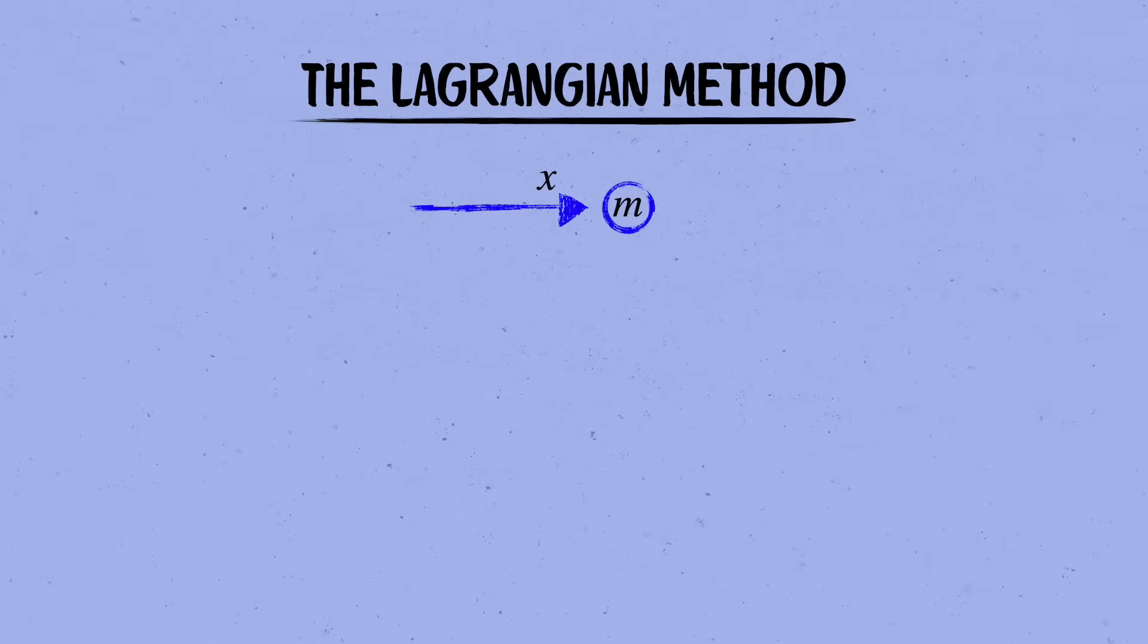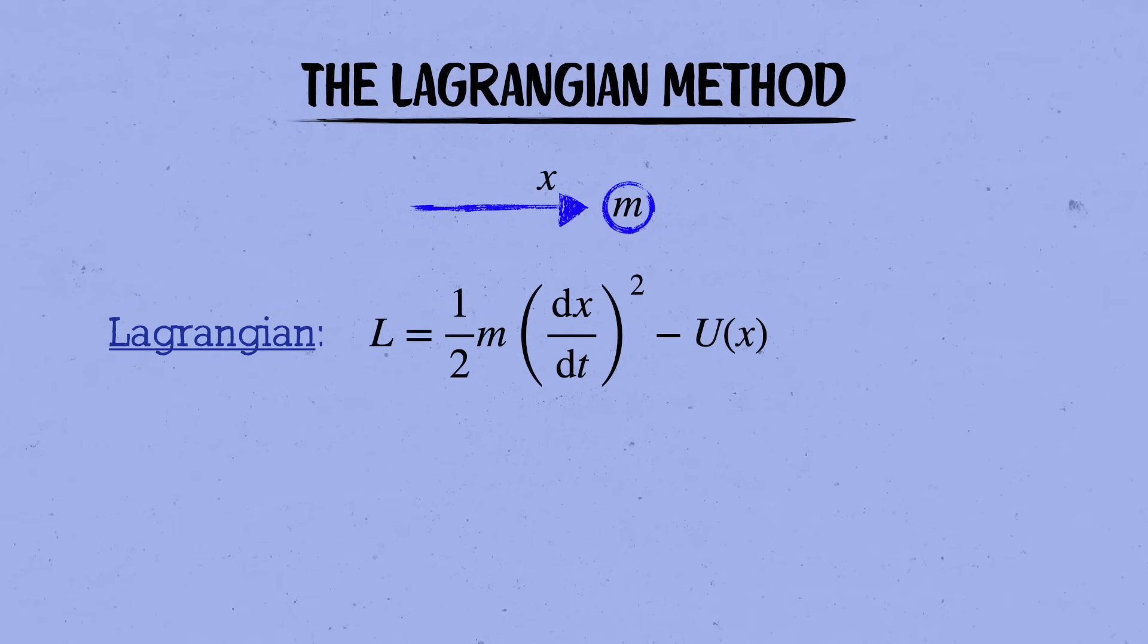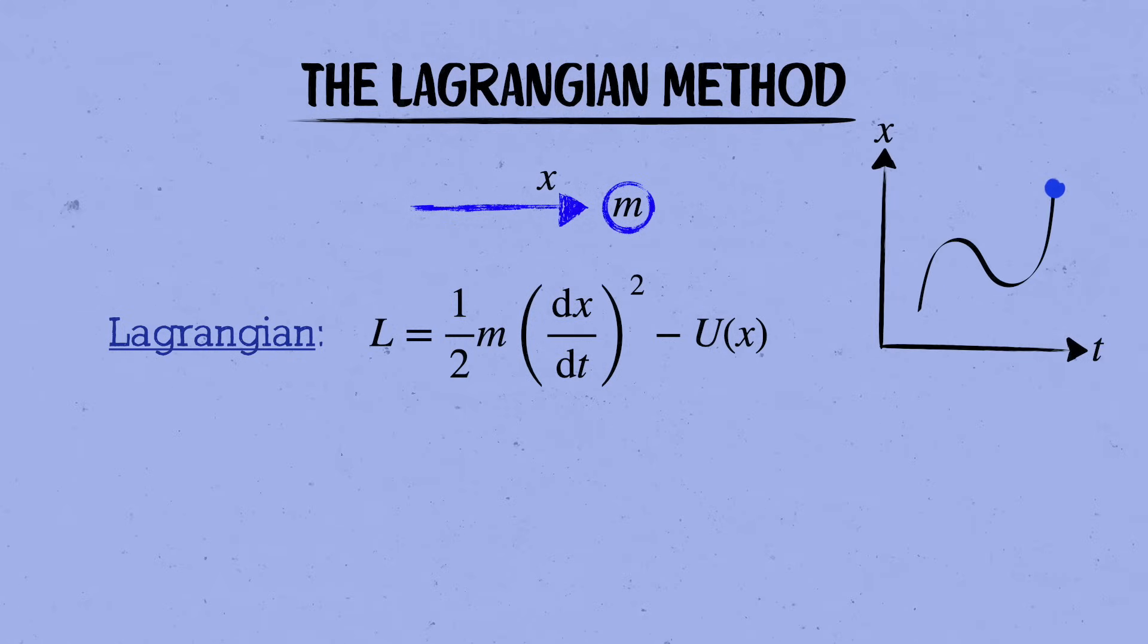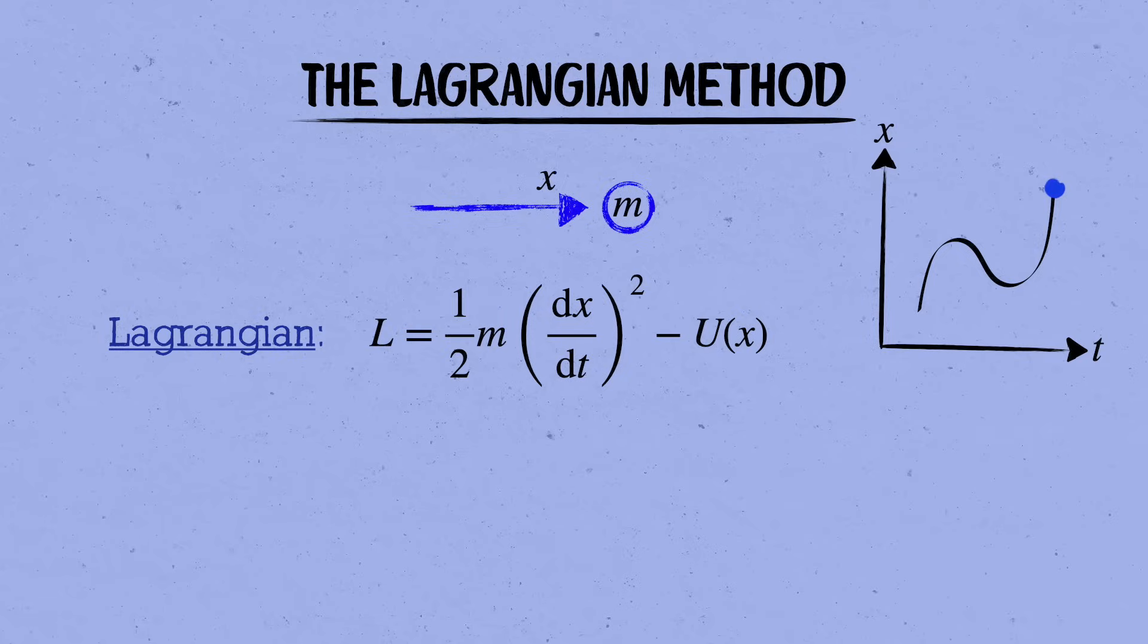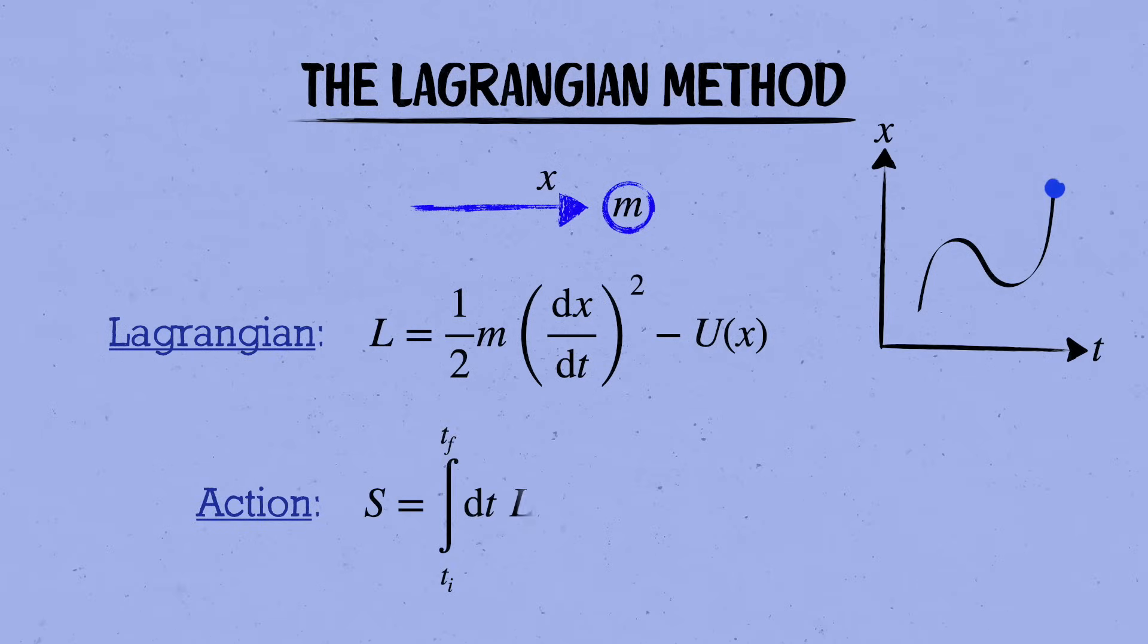So, it'll be useful to quickly review how Lagrangians work for particles, and then we'll see how to generalize that for fields. Say we have a particle of mass m with coordinate x. We define the Lagrangian by taking the difference between the particle's kinetic energy, 1 half m, times dx by dt squared, and its potential energy, u of x. As the particle moves around with time, its kinetic energy and potential energy are both changing, and so the Lagrangian is a function of time. We define the action by integrating the Lagrangian over time.